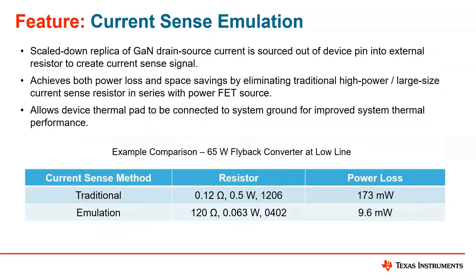Current sense emulation is basically a scaled-down replica of the drain-to-source current that we're emulating, so we can eliminate the external shunt resistor you would typically have in your system. That external shunt resistor has a required loss because you're passing current through a resistor that does nothing except sense. This current sense emulation is able to reduce all those power losses. In our example, the traditional solution for a standard 65 watt converter might be 173 milliwatts of power loss. Through current sense emulation, we're able to significantly reduce it down to only 9.6 milliwatts.